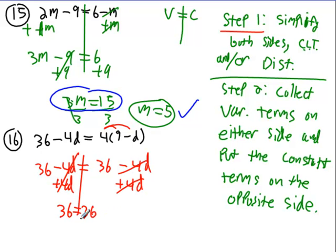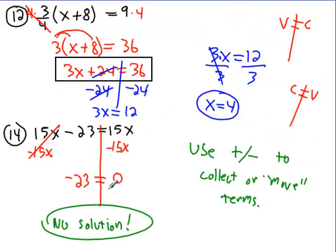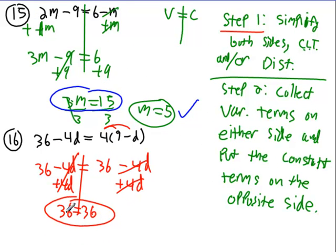And there are no variables here. The x's, the d's, whatever you want to call them are gone. When you have a statement like this, similar to a statement like this, however this one is false. So that's no solution. But if you actually wind up with this and it's true, which it is, 36 does equal 36. This is called infinite solutions.